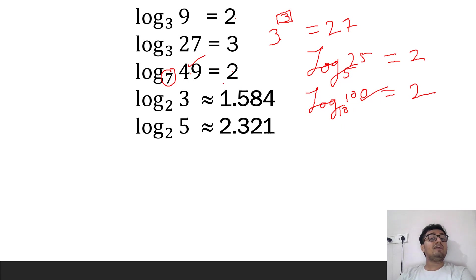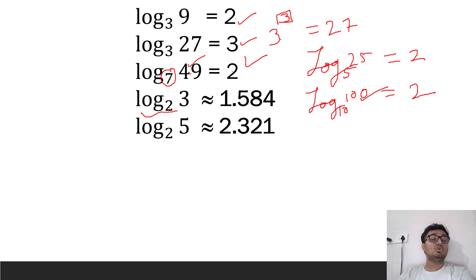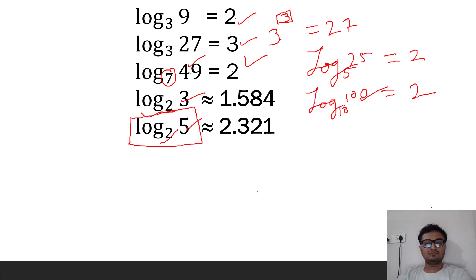When the logarithm value can be found exactly, we write it directly. When it cannot be found exactly — such as log of 3 base 2, meaning: what power of 2 gives 3? — we simply keep it in symbolic form just as we keep √2. That is the meaning of logarithm, and it became the key to representing these intermediate powers.